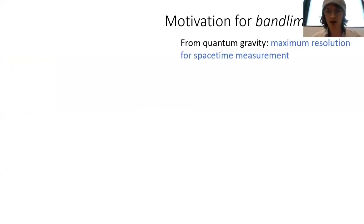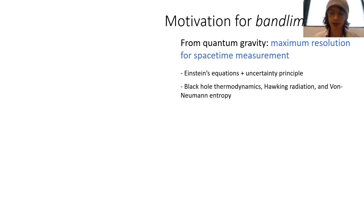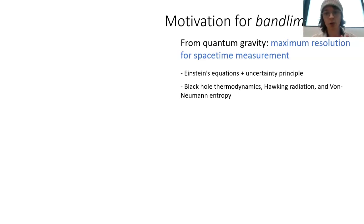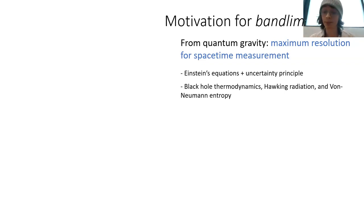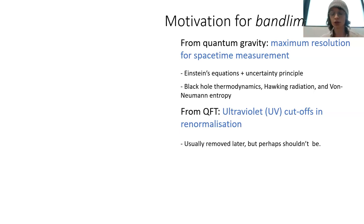From quantum gravity, we have this idea of a maximum resolution for space-time measurement, where if we combine Einstein's equations with the uncertainty principle, we get the idea that there's only a finite maximum resolution to which you can measure space-time distances before curvature uncertainty makes it unable for you to resolve anything. We also have black hole thermodynamics, Hawking radiation, and von Neumann entropy that predict a similar thing, where you get this discretization of space-time from ultraviolet cut-offs of quantum fields around black holes. And that's something with QFT as well — we have UV cut-offs and renormalization, which often are removed later after some calculations, but perhaps we don't need to.